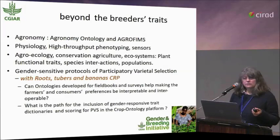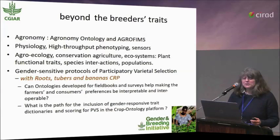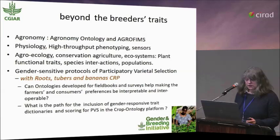Our ontologies are not really covering the functional traits, description of ecosystem services, and interactions between species. When you start to go beyond the single crop entry point you begin to have other challenges, and we would really like to be useful to those research projects as well.